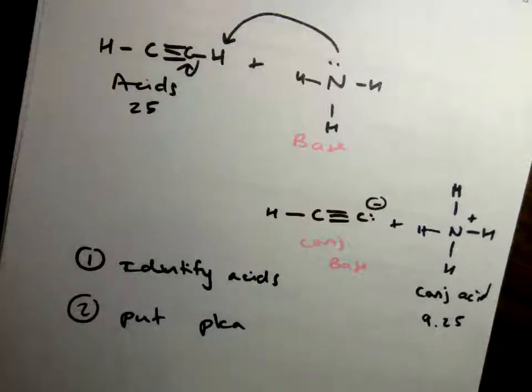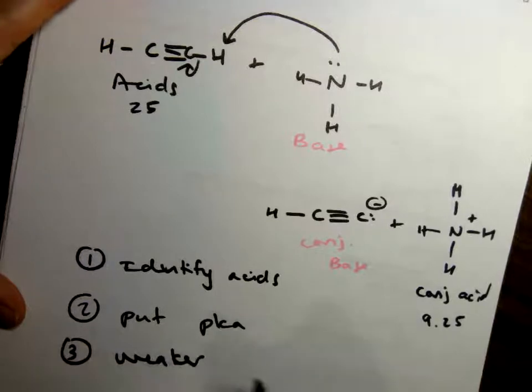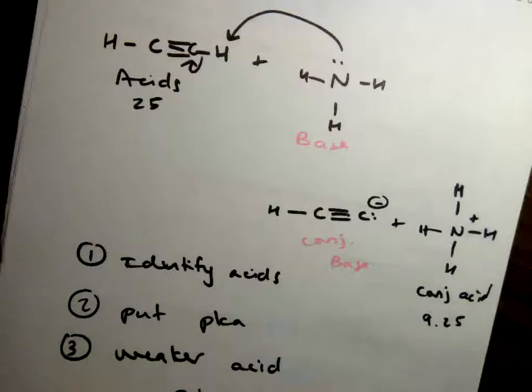So between these two, it's going to favor the weaker acid. The weaker acid is the bigger acid. Or the bigger pKa, I mean.